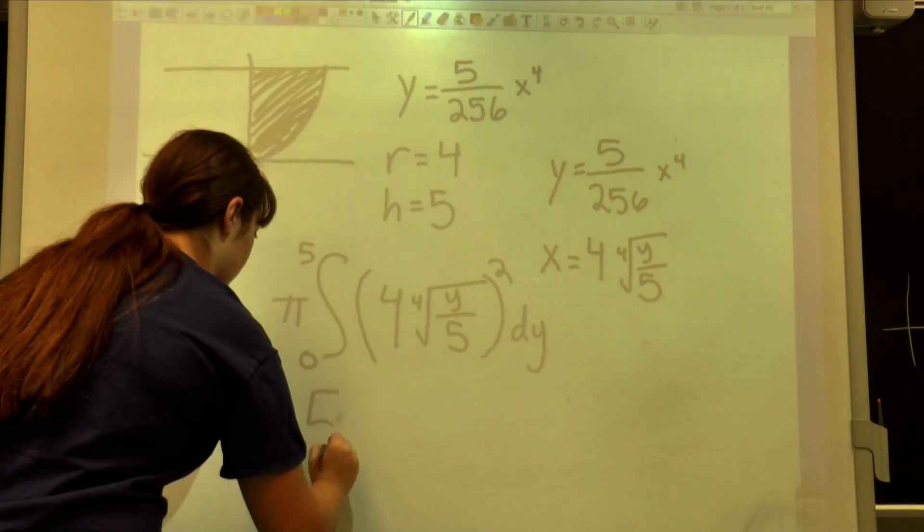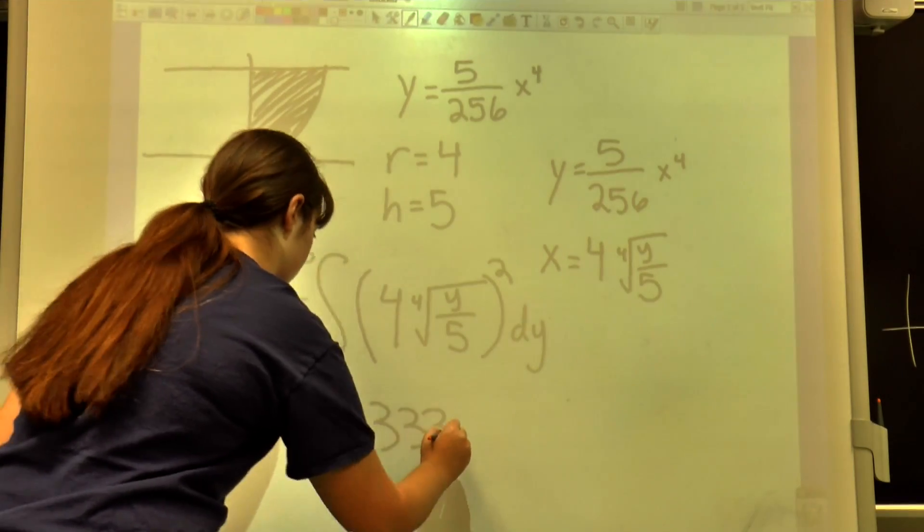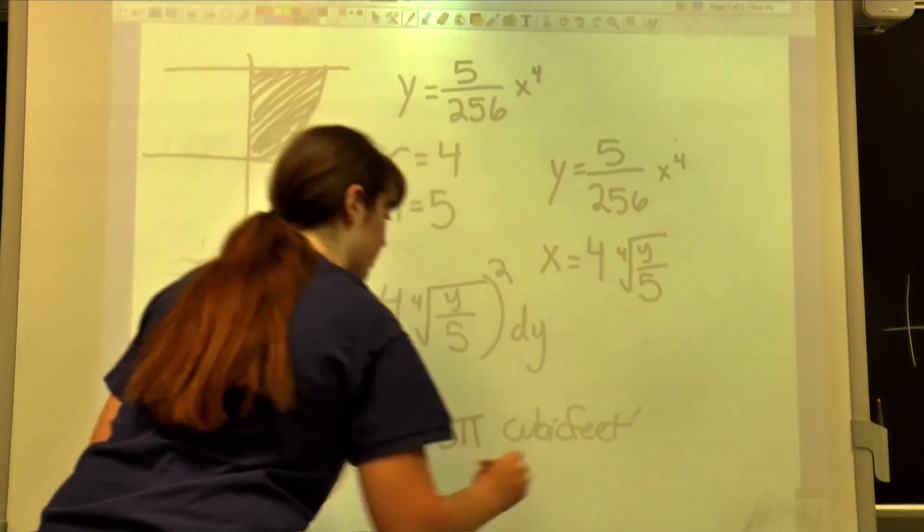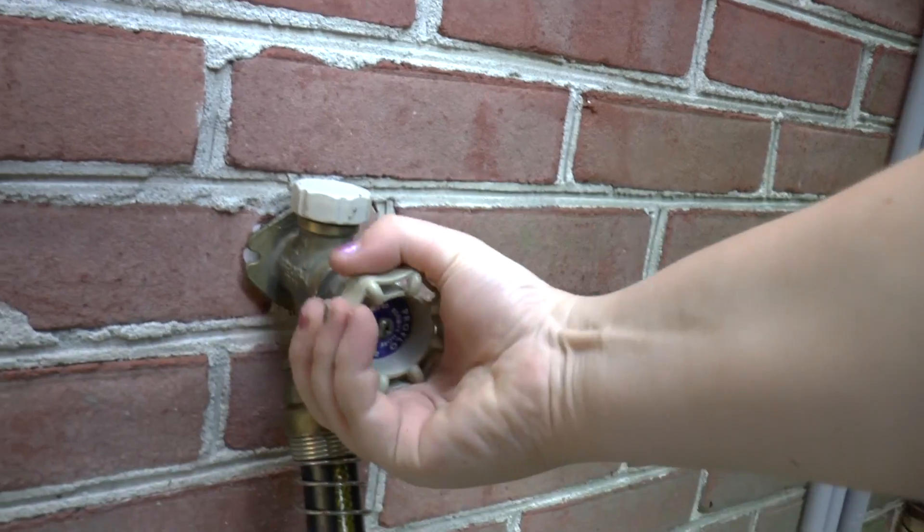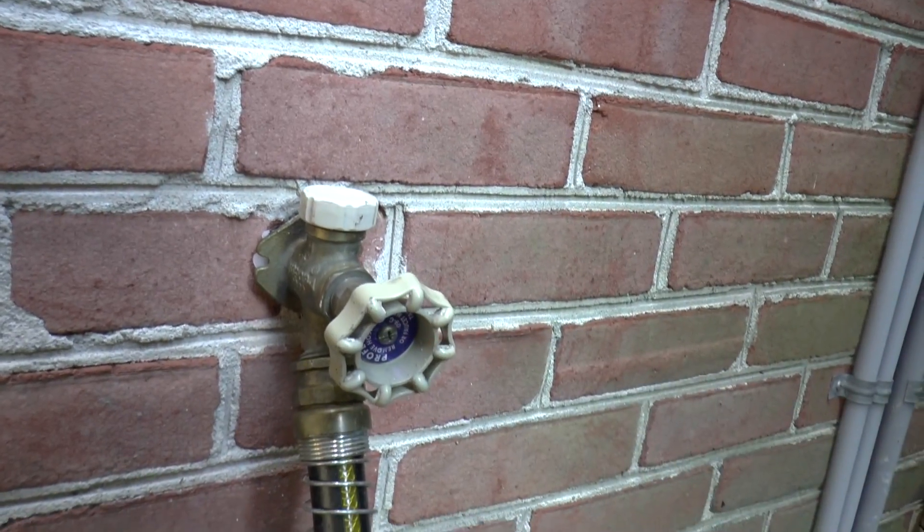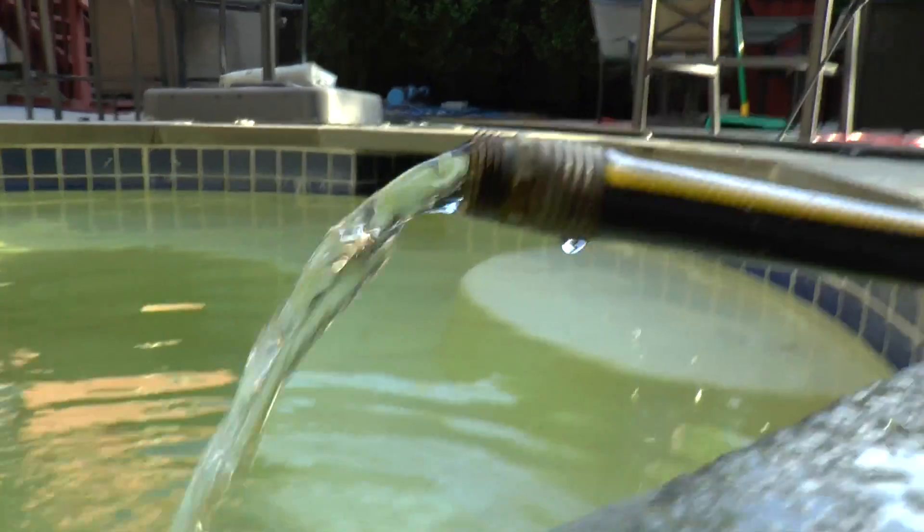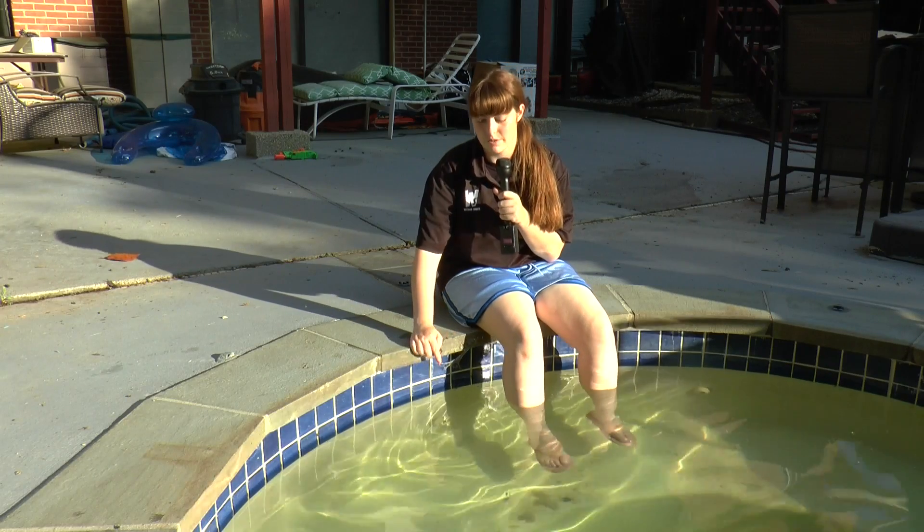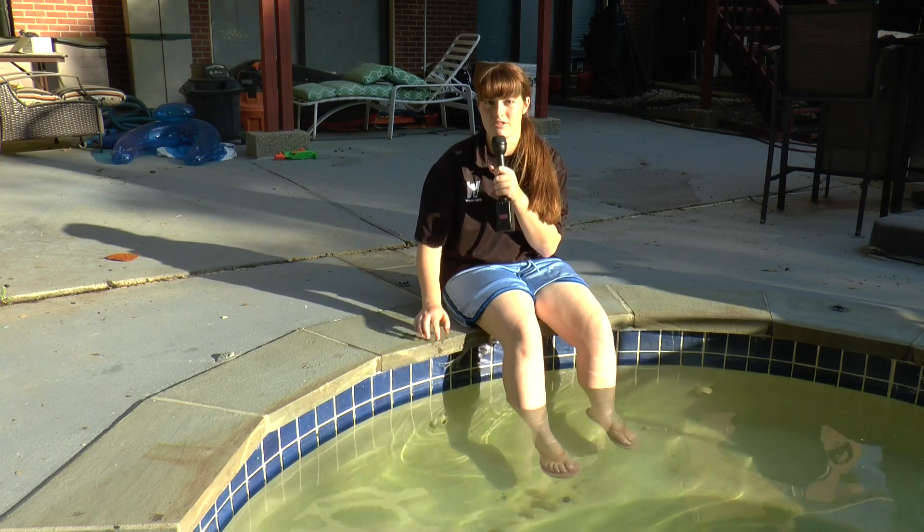Once the integral is complete, we get a volume of 53.333 pi cubic feet. I then added a hose that pumps out water at a rate of 7 cubic feet per minute. This pool has jets at exactly 2 and a half feet from the bottom. So we are going to find how fast the height is increasing as soon as it hits these jets.